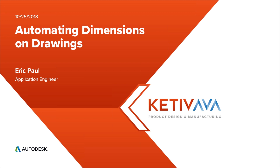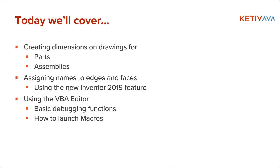If you have any questions, go ahead and type them into the GoToWebinar chat panel at any time. Today we're going to be covering creating dimensions on drawings specifically for both parts and assemblies that we bring in. There are a lot of different ways you can go about it, and the way I'm going to show you today is going to be based on the attributes that you can add to the faces and edges of your part. This was made significantly easier in 2019.